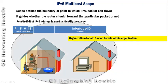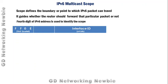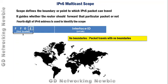The final scope is represented by the value E, which means there is no boundary for the packet — it can travel globally. This is the global scope. These were all the scopes of multicast packets, starting from the interface level up to the global level, all dictated by the fourth digit of the IPv6 multicast address. Thank you very much for your time, and see you in another IPv6-related video.